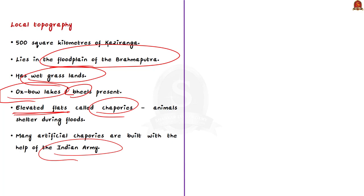So to summarize the habitat features: Brahmaputra River, River Diphu, flat plains of the Brahmaputra, wet grasslands, oxbow lakes (also called Beels), and chapuris — these are the basic information regarding the unique habitat of Kaziranga National Park.